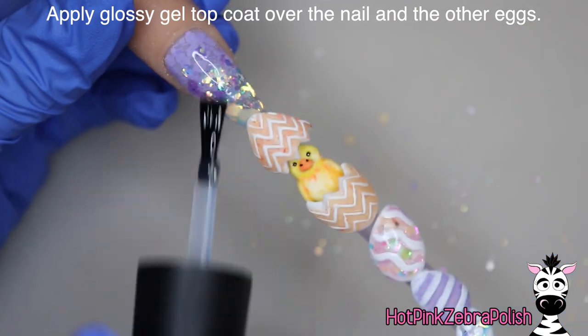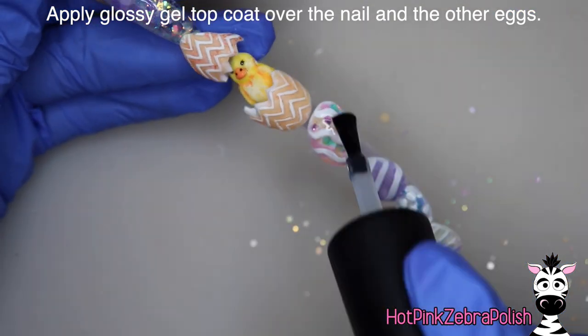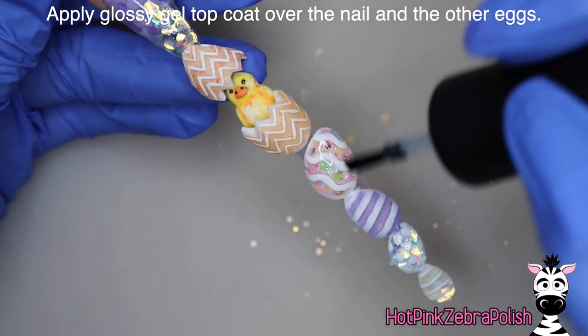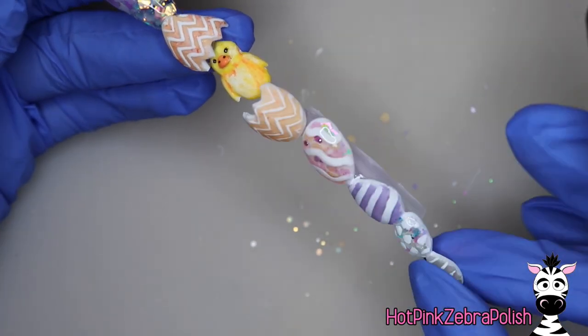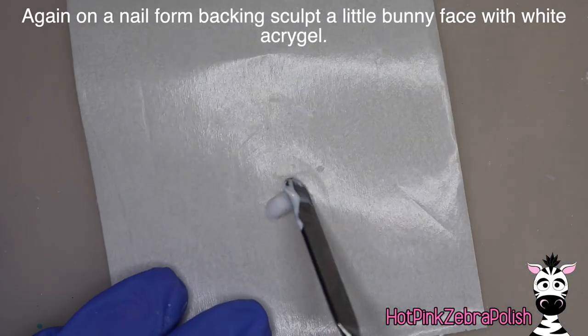Then we're going to apply glossy gel top coat to our nail. Oh, look at how gorgeous that glitter is. Absolutely love it. And then over the two eggs that do not have top coat, so that's the multicolor one and the blue one.